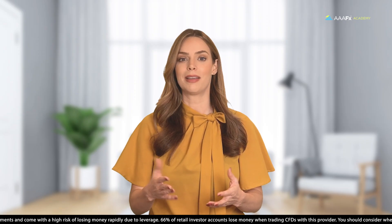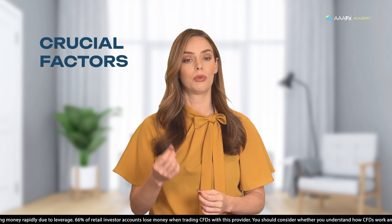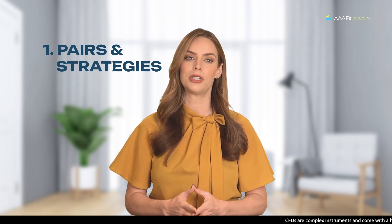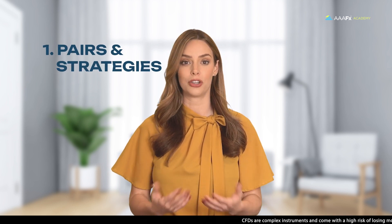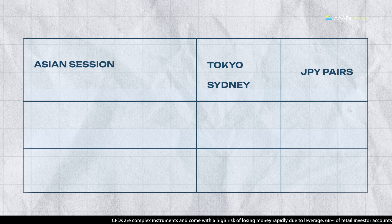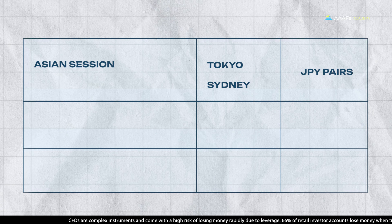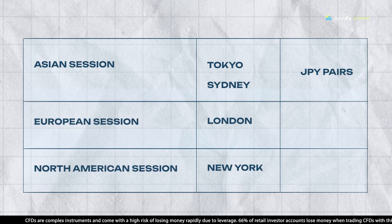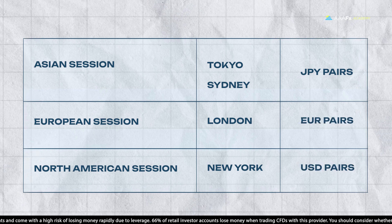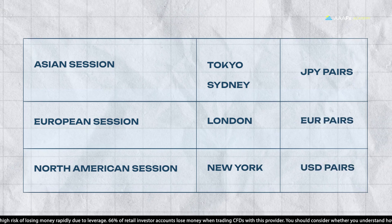Let's discuss a couple of crucial factors to consider when trading CFD. First up, we have pairs and strategies. The pairs you choose depend on the market session and your strategy. For instance, during the Asian session, JPY pairs might be your go-to as they react more to news and events from Japan and Asia. In the European or American session, focus on EUR or USD pairs for responsiveness to news from Europe or the USA.